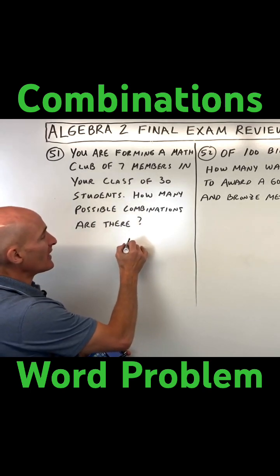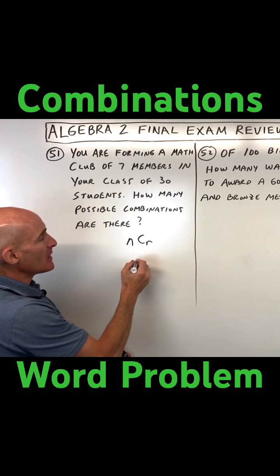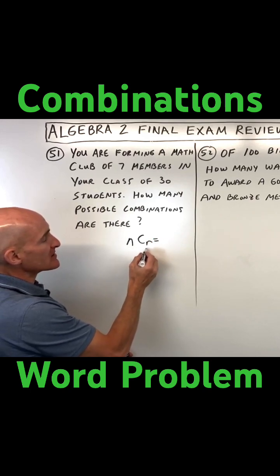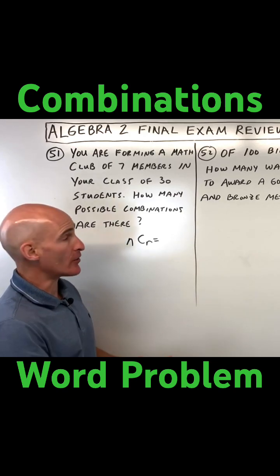NCR. And remember, NCR is saying out of N items, how many ways are there to choose R where the order doesn't matter?